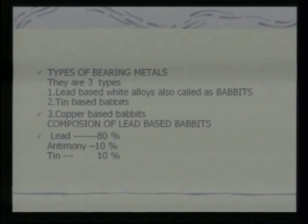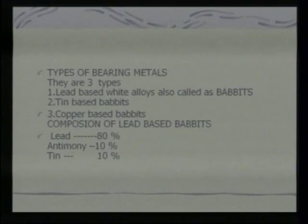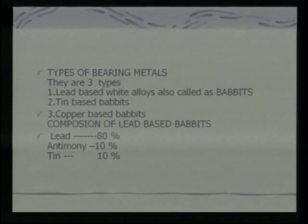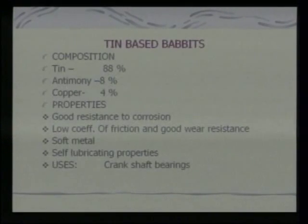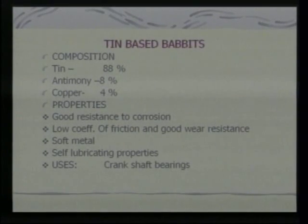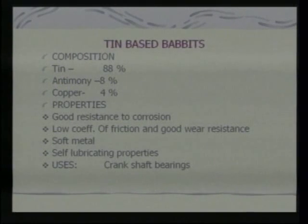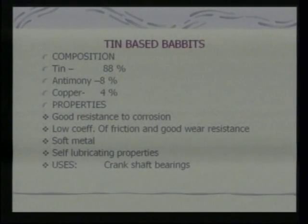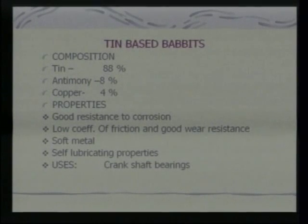There are three types of bearing metals: 1. Lead-based white alloys (babbits) — lead up to 80 percent, tin 10 percent; 2. Tin-based babbits — tin up to 88 percent, antimony 8 percent, copper 4 percent; 3. Copper-based babbits. Tin-based babbits have good corrosion resistance, low coefficient of friction, good wear resistance, are soft with self-lubricating properties, and are used for crankshaft bearings.